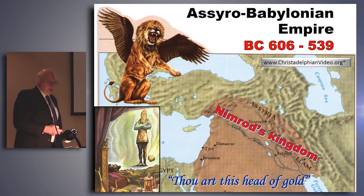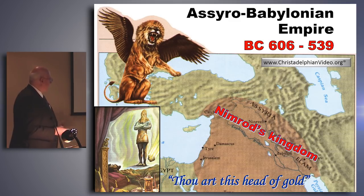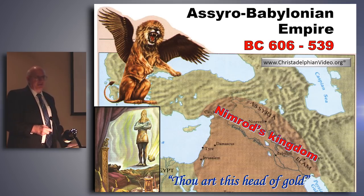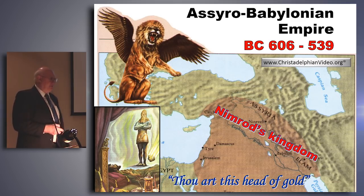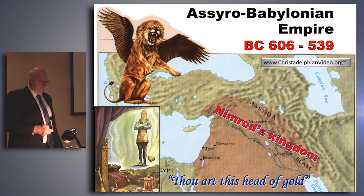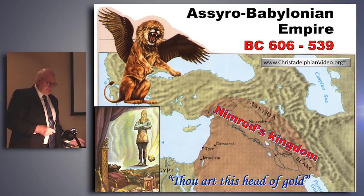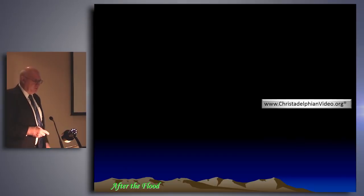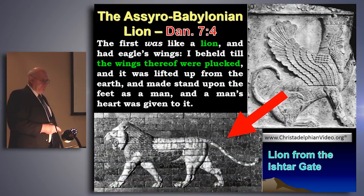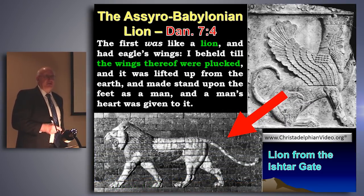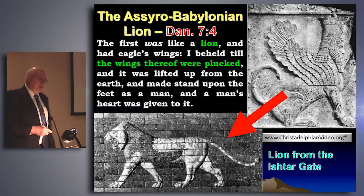Nebuchadnezzar is called the head of gold. Babylon was the head of the image, and it has to play a very important part in the future. In Daniel chapter 7, verse 4, we read that the first was like a lion. Here you've got the way that God viewed these empires. The reason he gave Nebuchadnezzar the dream of an image of a man was that that's how men view themselves.